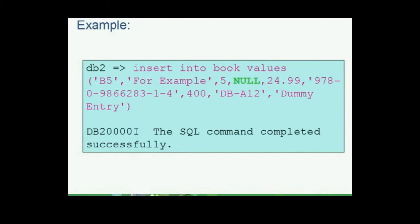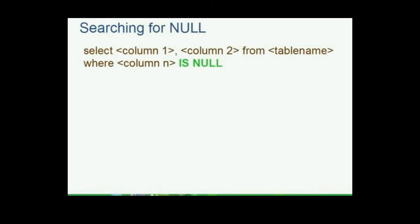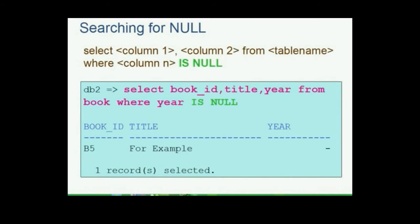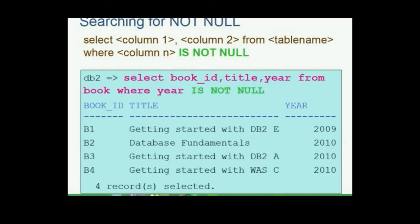To introduce the IS and IS NOT operators, a single row with a null value in the column year is inserted into the book table. The IS operator is used for fetching null values: SELECT book_id, title, year FROM book WHERE year IS NULL. Likewise, the IS NOT operator is used for fetching values which are not null: SELECT book_id, title, year FROM book WHERE year IS NOT NULL.